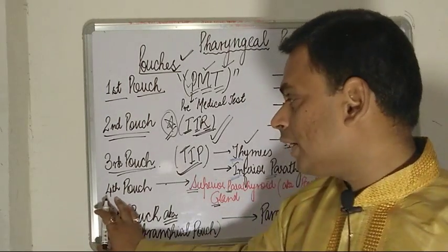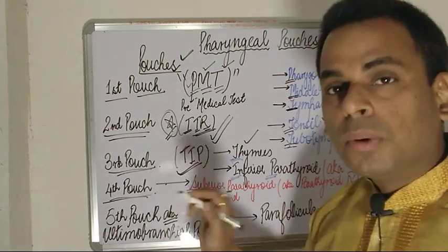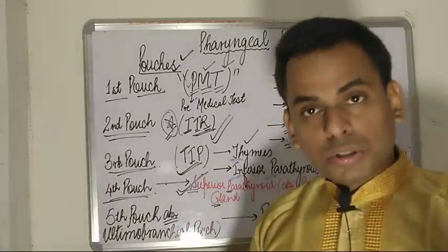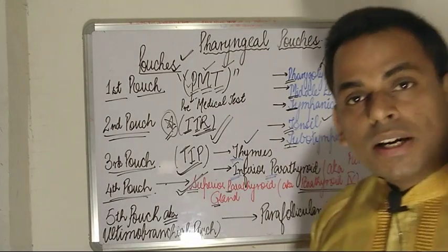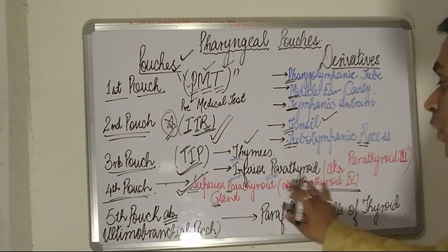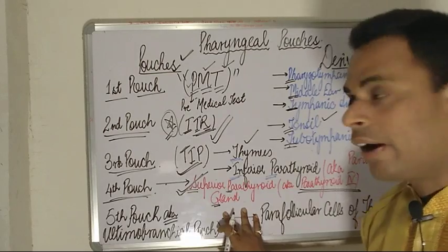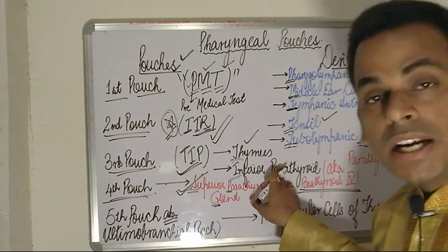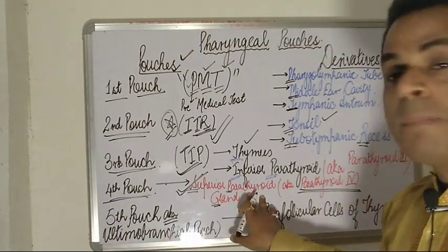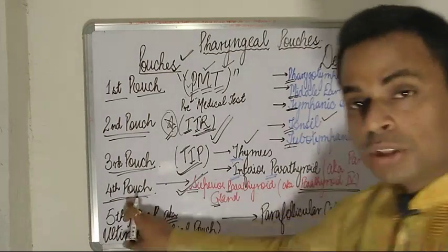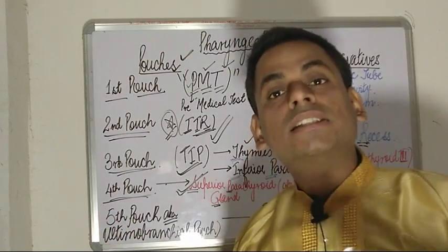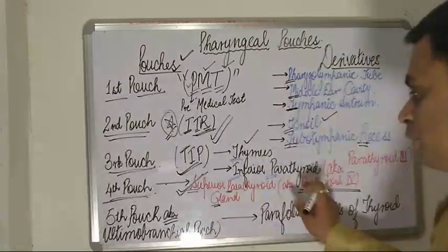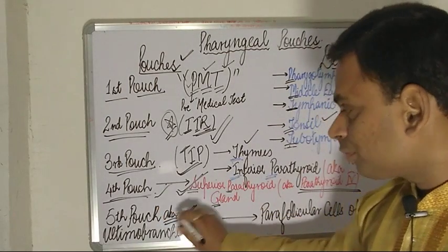Moving on to the fourth pouch: the only structure derived from the fourth pouch is the superior parathyroid glands, also called parathyroid 4. It becomes very confusing — remember that the inferior parathyroids are derived from the third pouch, whereas the superior parathyroid glands are derived from the fourth pouch. Inferiors come from three, superiors come from four.